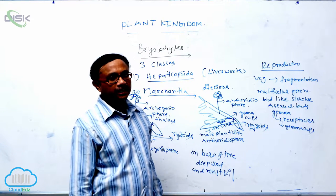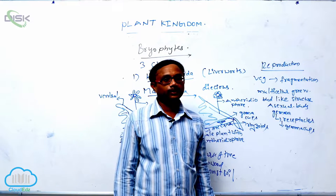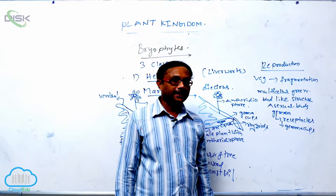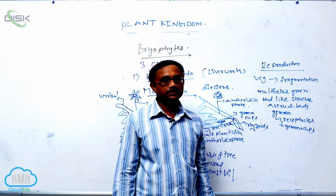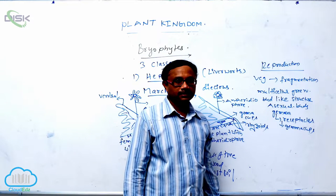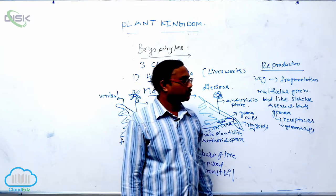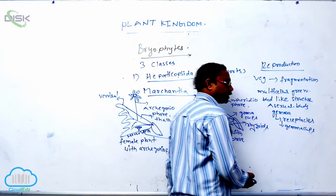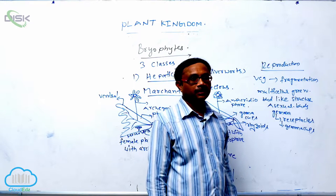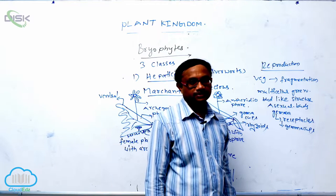After reaching the archegonia, fusion occurs forming a zygote, which is converted into an embryo. The embryo is then differentiated into the sporophyte, which is a diploid multicellular structure. The sporophyte is differentiated into foot, seta, and capsule. In Marchantia, generally only the capsule is present. Inside the capsule, the sporophyte produces spores as the spore mother cells undergo meiotic division. The spores then germinate to produce the dominant gametophyte stage.